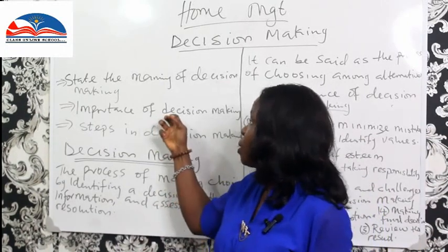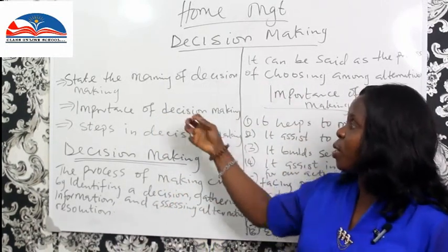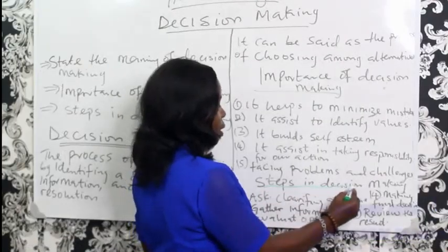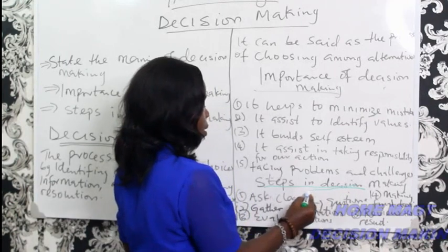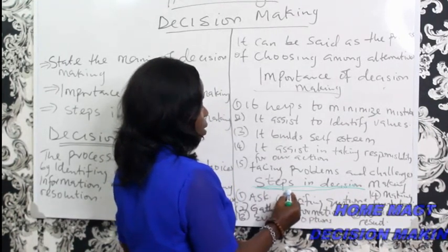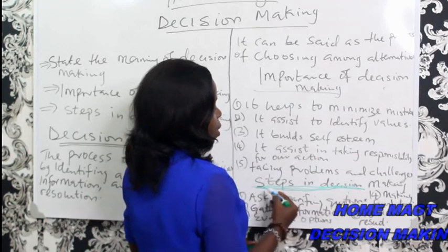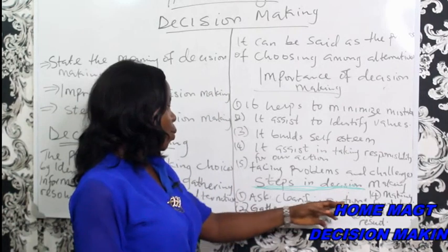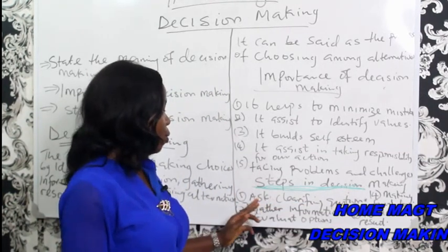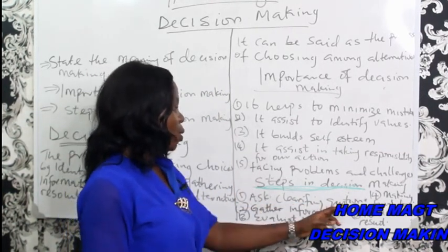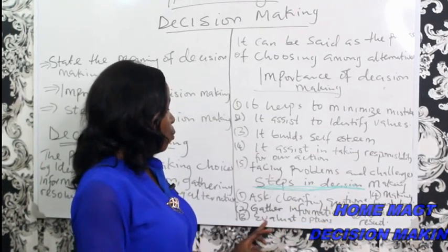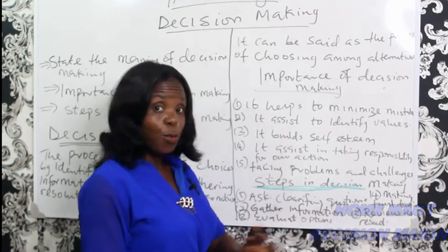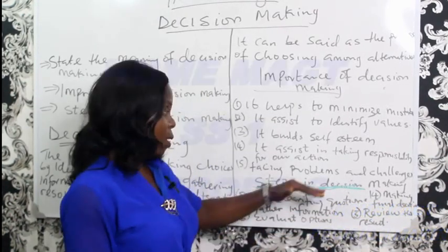We've finished the first and second objectives. Now let's look at the steps in decision making. The steps are: ask clarifying questions, gather information, evaluate options, make a final decision, and review the results. Follow along so you can see what's covered — these are the five steps we'll go through.